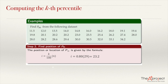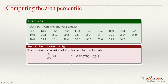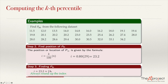Rounding up 23.2 gives position 24. Counting through the data: 1, 2, 3 ... 10, 20, 21, 22, 23, 24 — the data at position 24 is the 80th percentile. That data value is 29.4.